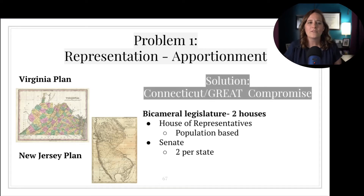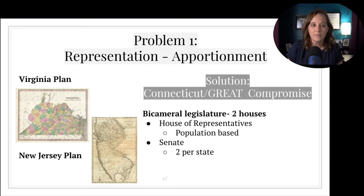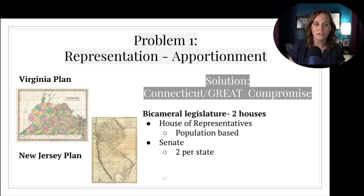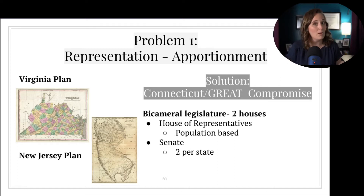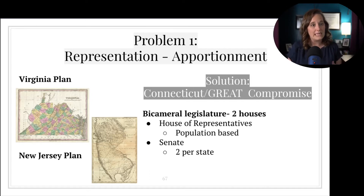The representatives from the state of Connecticut came up with a compromise that would satisfy both small and large states. They came up with a bicameral or two-chambered legislature in which one chamber would be based on population, making large states happy, and the other would have equal representation, making small states happy. This is the basis of our current Congress.